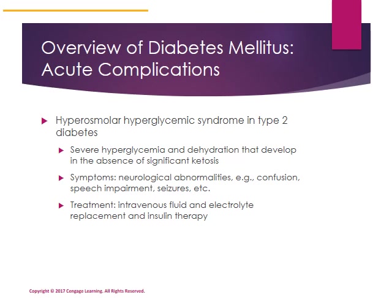Diabetic ketoacidosis is a complication of type 1 diabetes. Hyperosmolar hyperglycemic syndrome, often associated with type 2 diabetes, involves severe hyperglycemia and dehydration that develop in the absence of significant ketosis. Symptoms of HHS include neurological abnormalities such as confusion, speech impairment, and even seizures. Treatment includes intravenous fluids, electrolyte replacement, and insulin therapy, which can be given IV in an acute care setting.